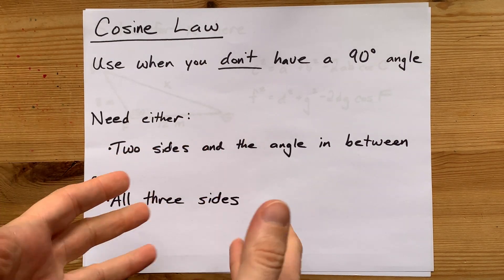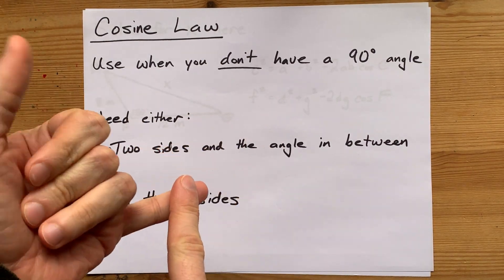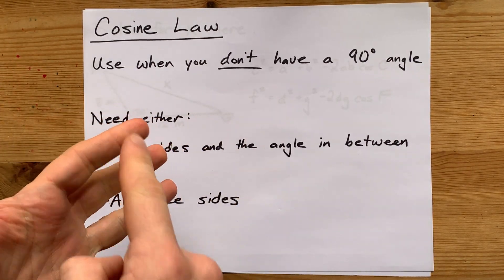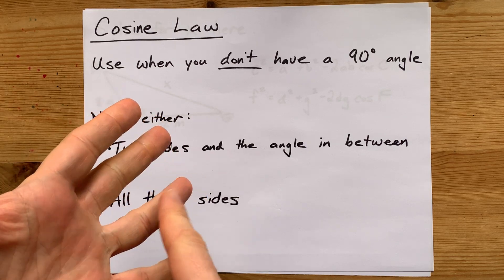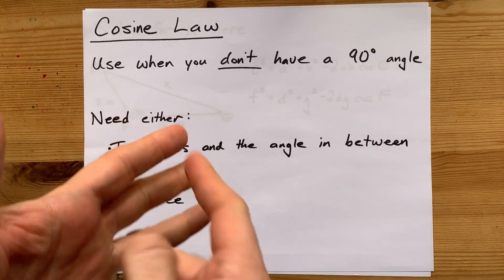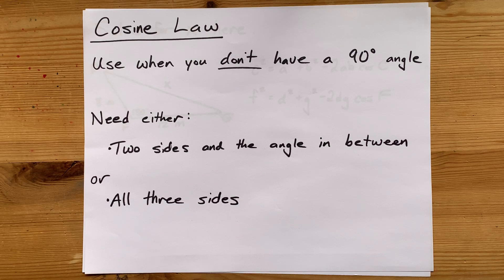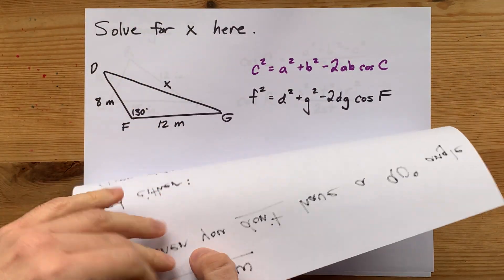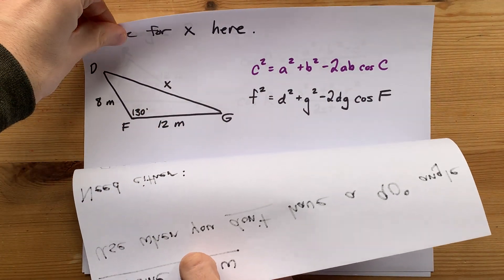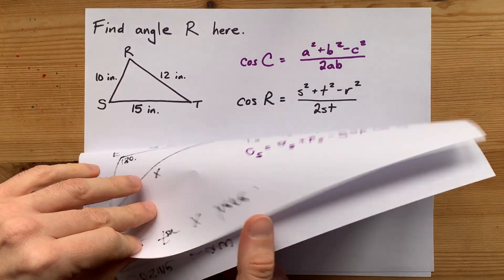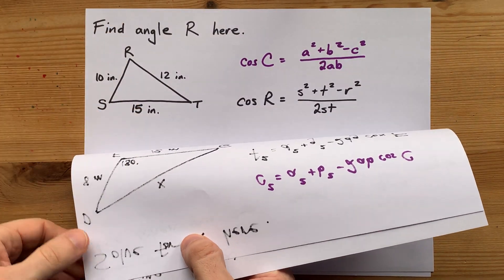If you do have a 90-degree angle, you can use Pythagorean theorem or regular SOHCAHTOA, like sine as opposite over hypotenuse, cosine as adjacent over hypotenuse. In both examples I have for you today, there's no 90-degree angle in these triangles, and so you can't use regular sine, cosine, and tan.